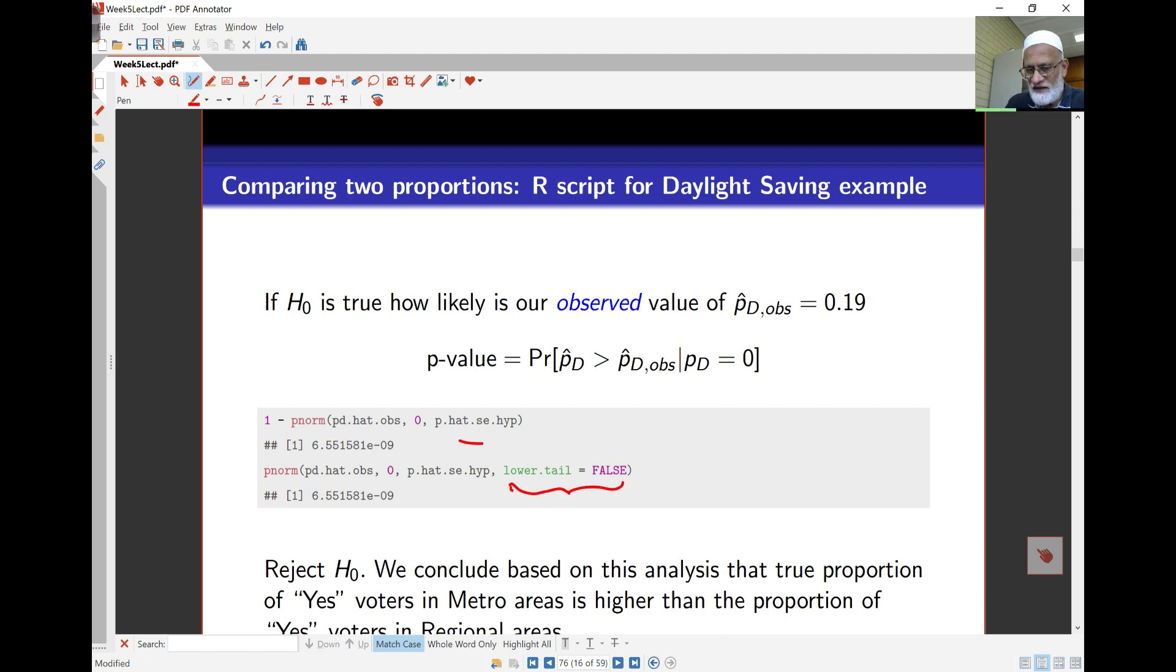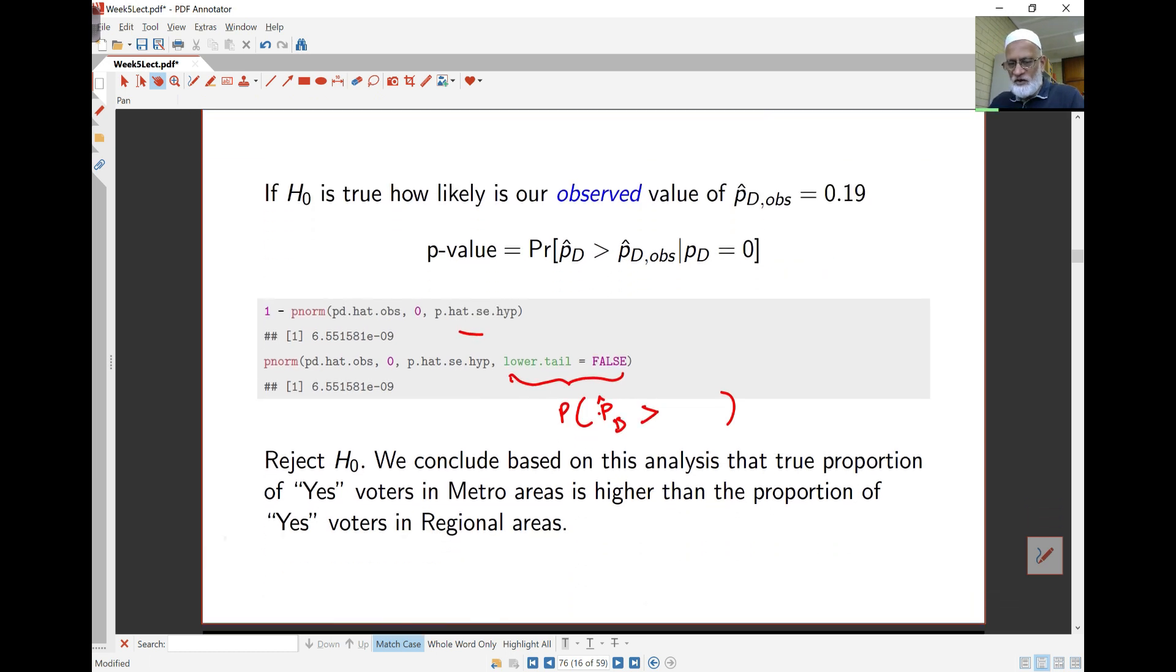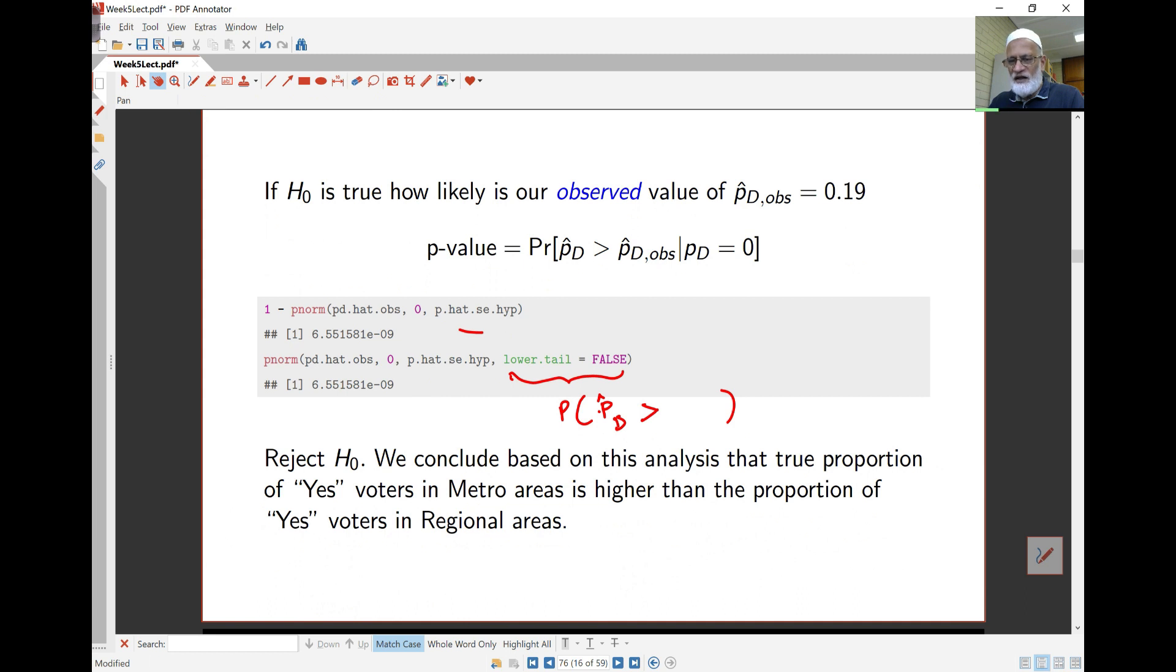If I take the same values but make lower tail false, it doesn't work out probability of less than, but it works out probability of bigger than. The probability here is p hat d is bigger than, is what I'm after. So lower tail false gives me that. By default in this particular function, the lower tail is equal to true. I'm setting it false explicitly, so it gives me the upper tail probability. Based on this hypothesis test, I'm concluding that the true proportion of yes voters in metro area is higher than that in regional, because the distribution says metro minus regional, and I'm looking at this bigger than zero.